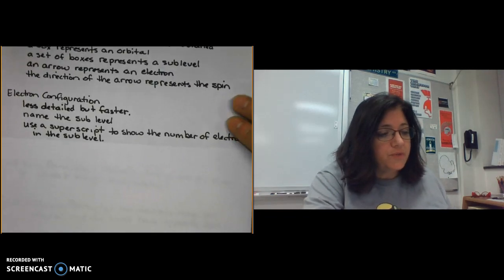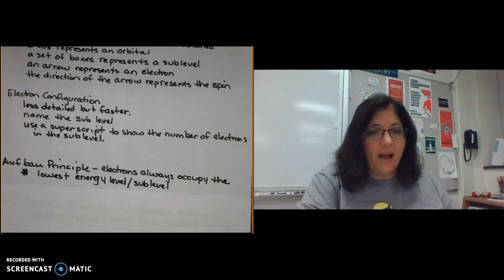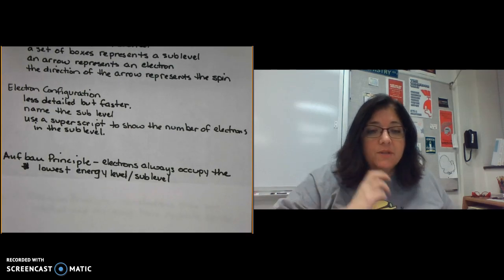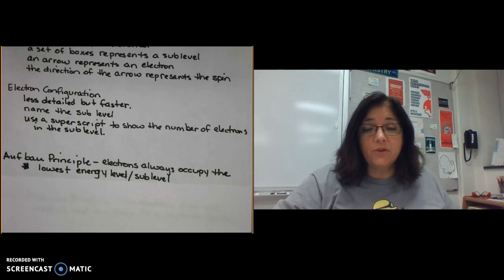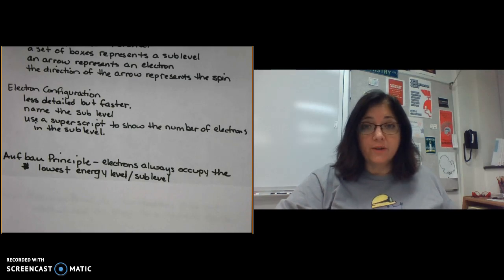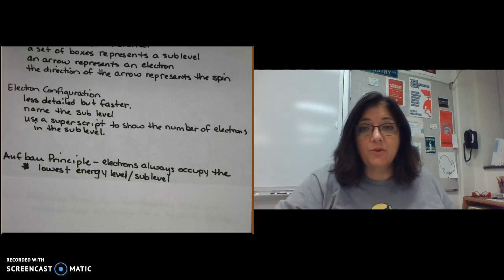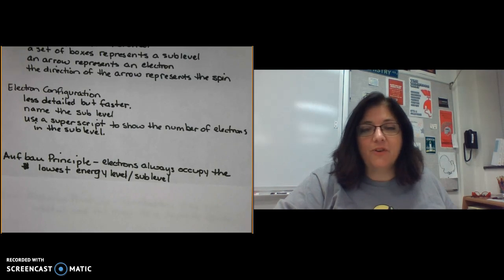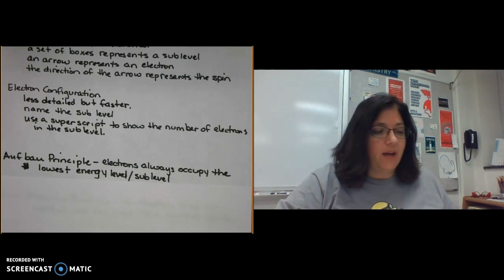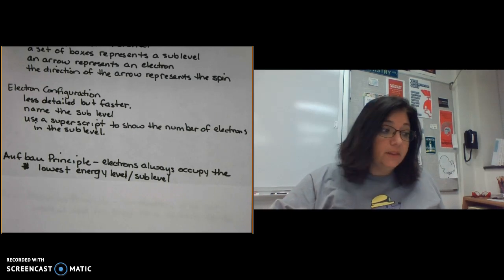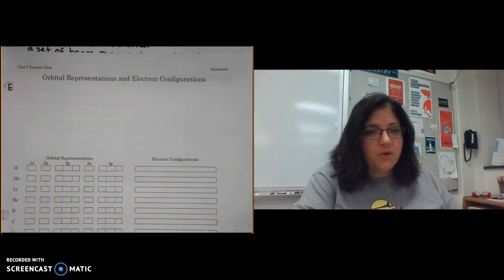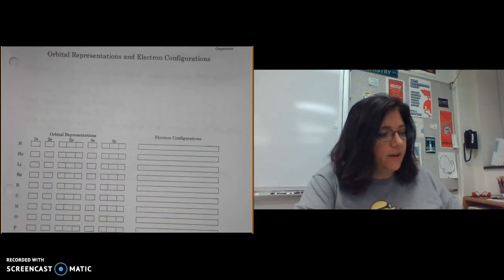The first of three rules is the Aufbau principle, which says electrons go into the lowest energy level available. For example, the 1s is the only sublevel in the first principal energy level — it's closest to the nucleus and has the lowest energy — so it gets electrons first. Hydrogen's one electron will go into the 1s.